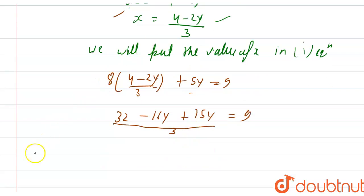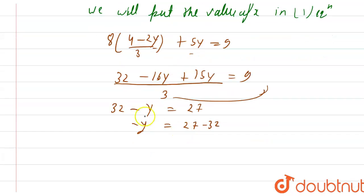In the next step, 32 minus 16y plus 15y, it will be minus y is equal to 9 into 3 is 27. So minus y will be equal to 27 minus 32. From here we are getting minus y equals minus 5, that is y equals 5.